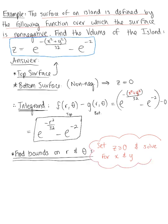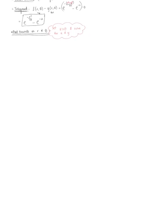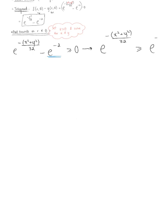We want to solve until we recognize what the Cartesian equation represents. We know z is defined as the natural exponential raised to negative x squared plus y squared divided by 32, minus the natural exponential raised to negative 2, and this is greater than or equal to 0. Adding e to the negative 2 to both sides gives us e to the negative x squared plus y squared over 32, which is greater than or equal to e to the negative 2.